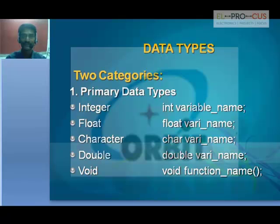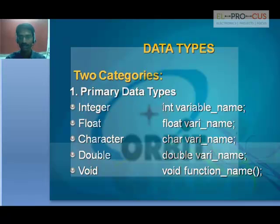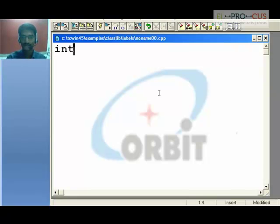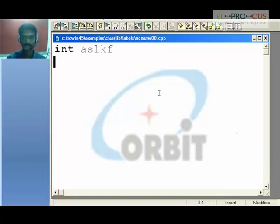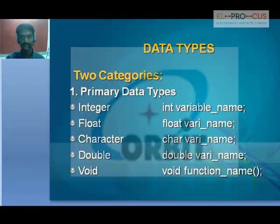We need to accept data using data types. Accepting data is possible in three ways: integer, for whole numbers from minus infinity to plus infinity — we use the keyword 'int'. Likewise, float for real numbers with decimal values, and character for characters like a, b, c, or whatever it may be. These are the primary data types in which we place our data.